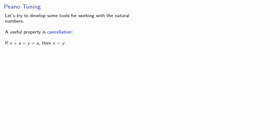Let's try to develop some tools for working with natural numbers. A useful property is cancellation, and we use that every time we do something like the following: if x plus a is equal to y plus a, then x is equal to y. We'll prove this.